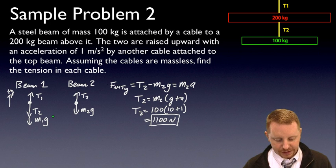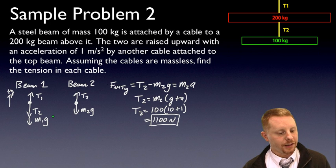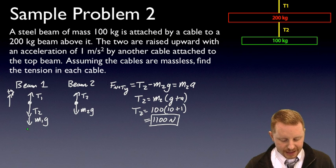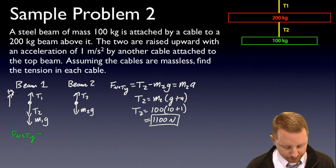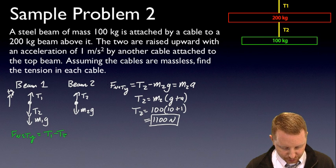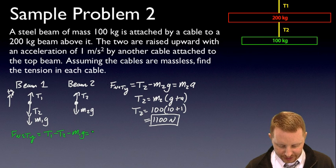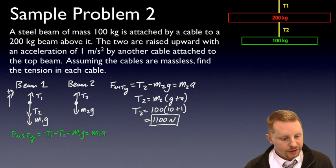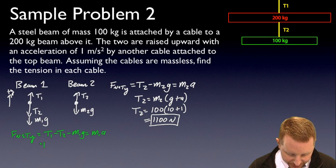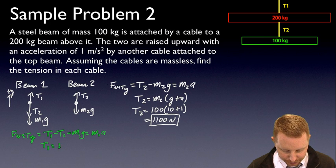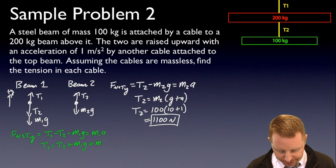Alright, let's see if we can do a similar thing for beam 1. Now net force in the y direction, as we're looking over here at just beam 1, is going to be T1 minus T2 minus M1g, and all of that has to equal M1a. So, if I rearrange this for T1, I find that T1 is going to equal T2 plus M1g plus M1a.